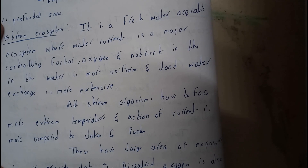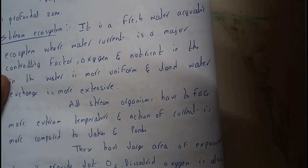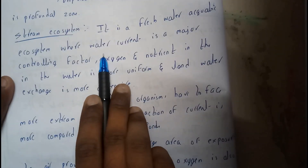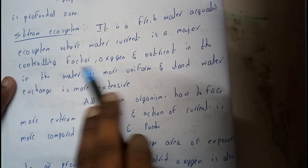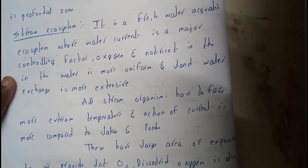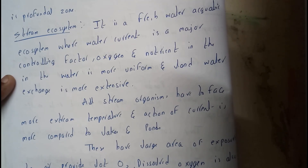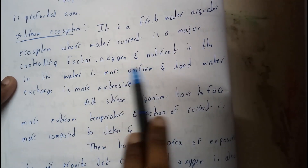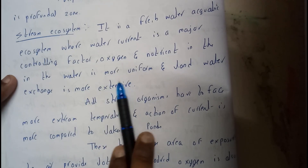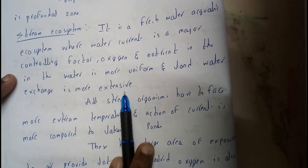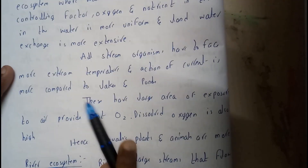Stream ecosystem is also a freshwater aquatic ecosystem where current is the major controlling factor. Current is nothing but the waves which come with pressure — like at a beach where water comes from a distance with some force. Those waves are called currents. Oxygen and nutrients in the water are more uniform, and land-water exchange is more extensive in streams.